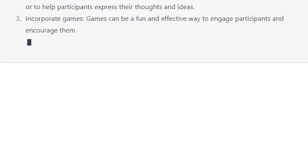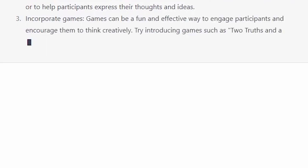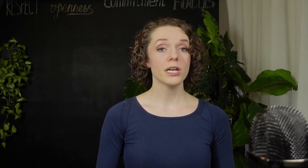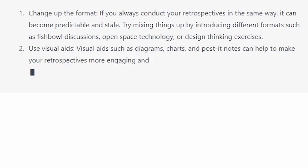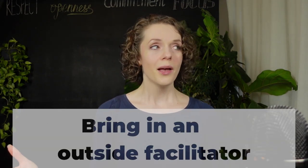Another suggestion it had: play games. Games can be a fun way to liven up your retrospectives and get everyone involved. For example, you could play Rose Thorn Bud or Start Stop Continue. The other suggestion was to use visual aids — charts, graphs, and diagrams can help illustrate your points and make retrospectives more engaging. And the last suggestion: bring in an outside facilitator. This is something we actually used to do quite often, switching Scrum Masters between teams during retrospectives, and it actually worked.